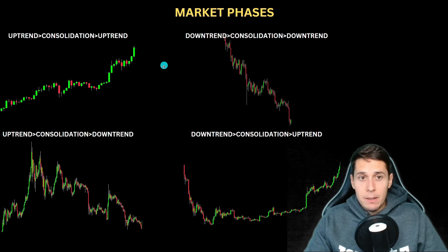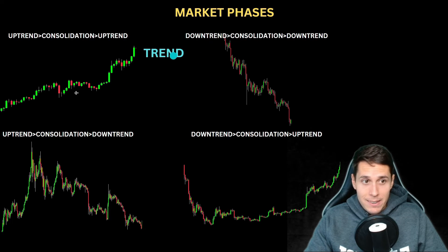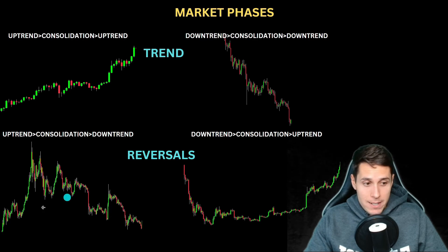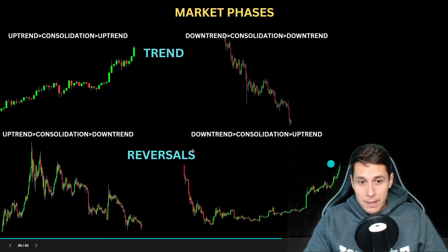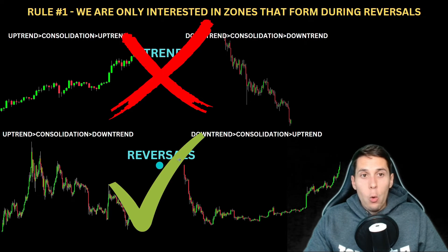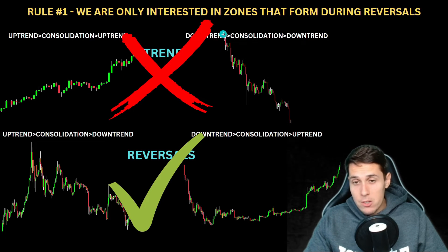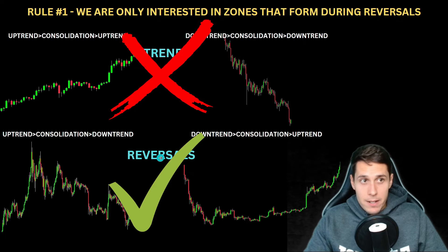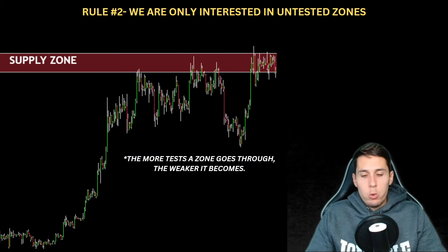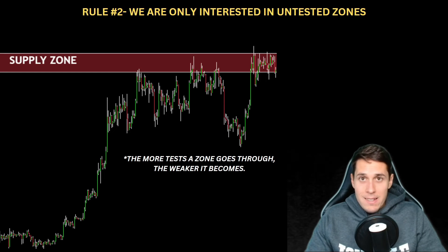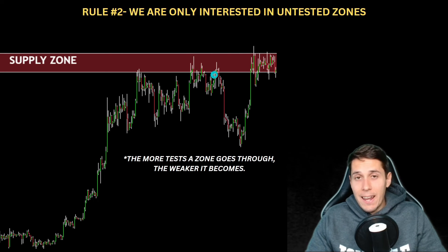Now I'll give you four rules for choosing the best zones to significantly increase your win rate. Remember the market phases: uptrend → consolidation → uptrend and downtrend → consolidation → downtrend are trends. Uptrend → consolidation → downtrend and downtrend → consolidation → uptrend are reversals. Rule number one: we are only interested in supply and demand zones that occur during reversals. We are not interested in demand zones during uptrend-consolidation-uptrend, or supply zones during downtrend-consolidation-downtrend. Rule number two: we are only interested in untested zones. The more tests a zone goes through, the weaker it becomes.